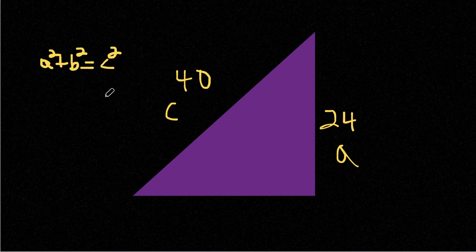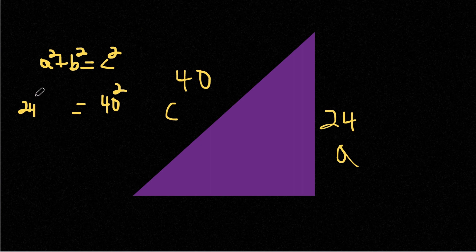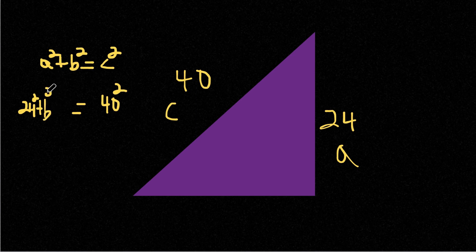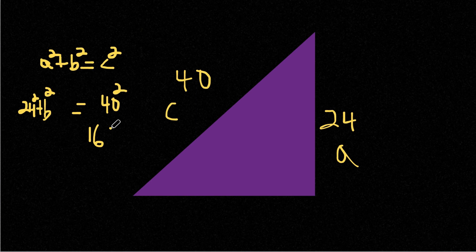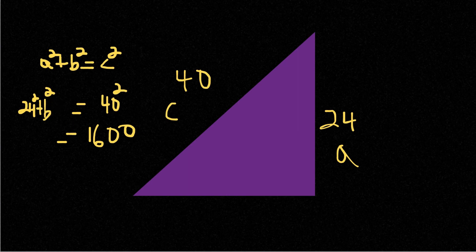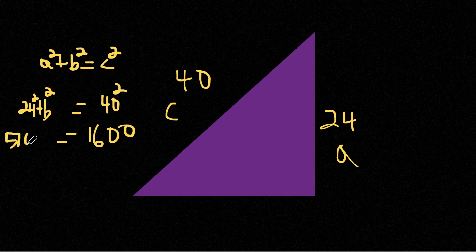So let's plug in 40 for C. We're left with 40 squared is equal to 24 squared plus b squared. Now what we want to do is solve and find the value of b squared. So 40 squared, that is 1,600. And this is equal to 24 squared, 576 plus b squared.